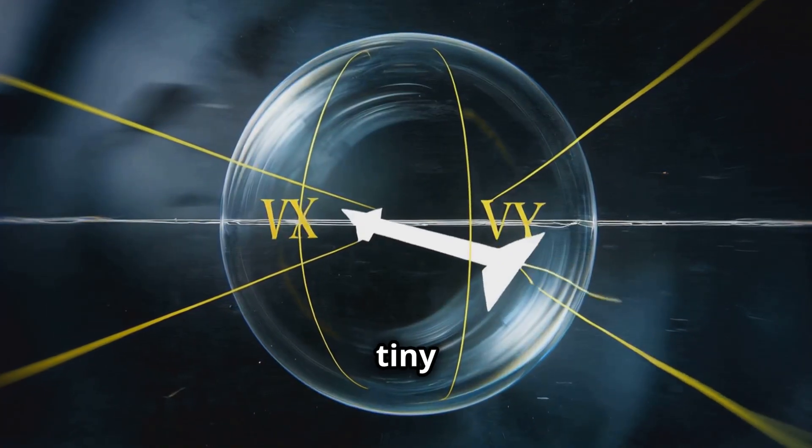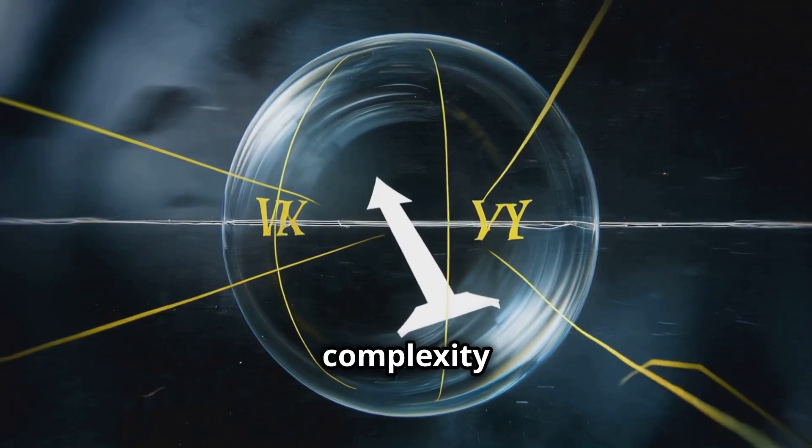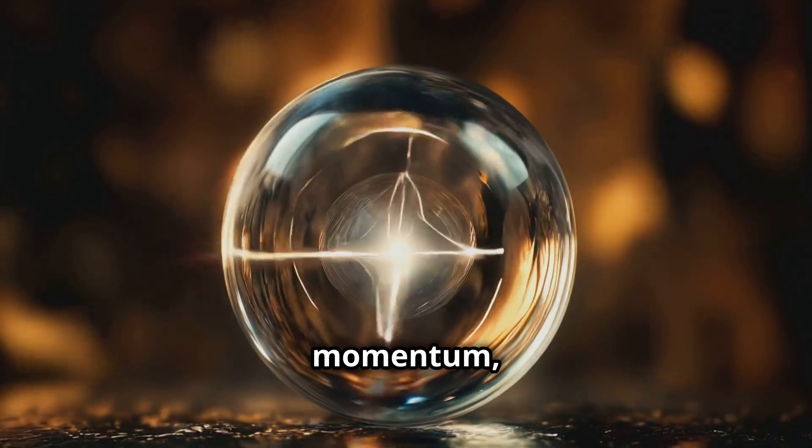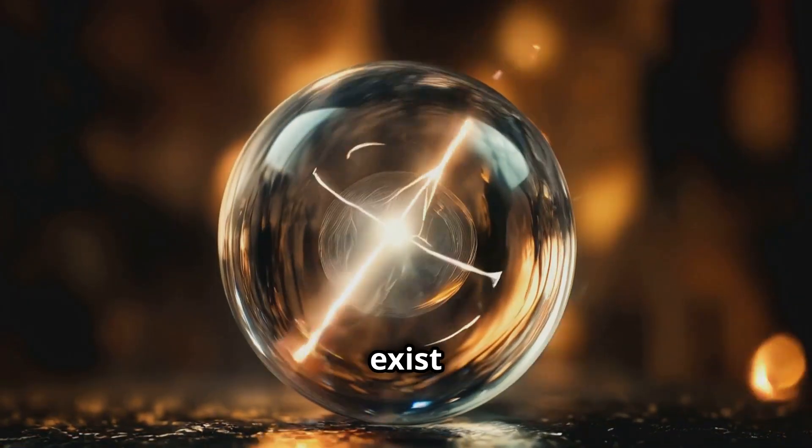These arrows, tiny but infinite in their complexity, encode everything: position, momentum, and even the probabilities of what might or might not exist.